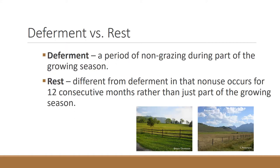A couple of terms we have to clear up before moving further is to distinguish between deferment and rest. These are quite different, especially in systems that have seasonal greenness. Deferment is any time that you don't graze from the initiation of growth in the spring through the period where the plant produces seeds — a period of non-grazing during just a part of the growing season, from initiation of growth through seed set. Rest is different: rest is deferment for at least one whole calendar year. Deferment is just a period of the year, generally from initiation to seed set, and rest is a whole year.